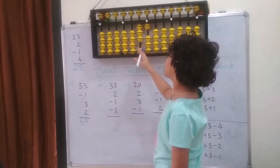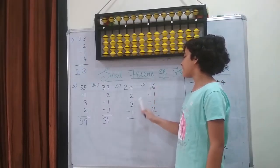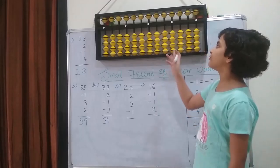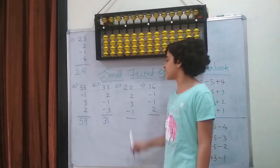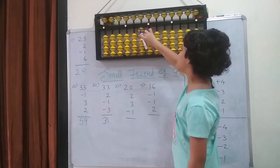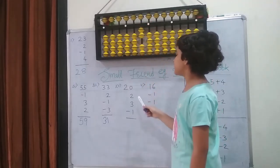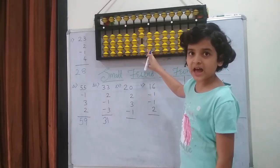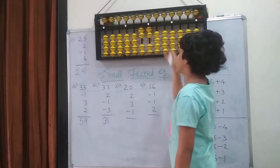Next question: 20 plus 2 plus 3 minus 1. So first on the abacus I am going to put 20. So 2 in the tens place: 1 and 2. And 0 in the ones place. Then I am going to add 2 in the ones place. I can because I have 4 beads left: 1 and 2.